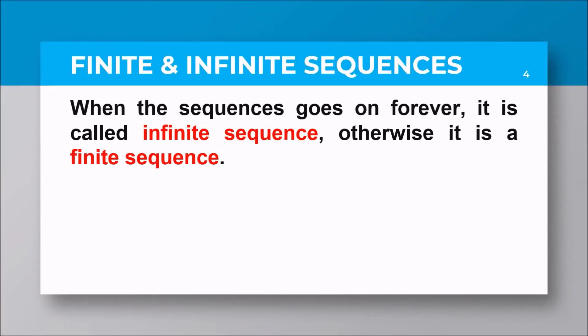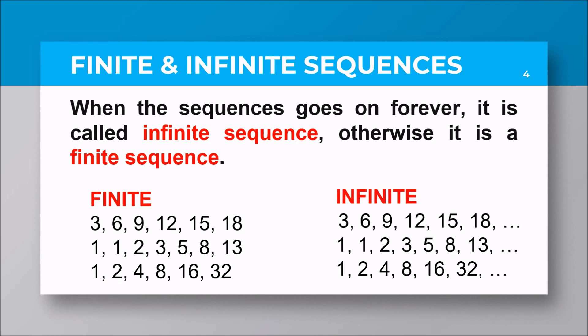When the sequence goes on forever, it is called an infinite sequence; otherwise, it is a finite sequence. Looking at our examples in two columns, finite has an end while infinite has no end. By symbol, from our examples you will see these three dots. How do you call that? Yes, that's an ellipsis.